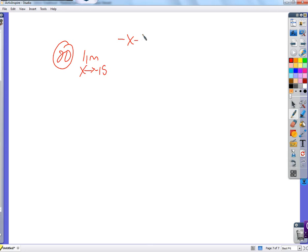The limit as x approaches negative 15 of negative x minus 15 over x squared minus 225. This is a difference of squares: x plus 15 and x minus 15. The negative in front of the x is the problem. If we factor out that negative, we get negative times x plus 15. We can cancel those out.